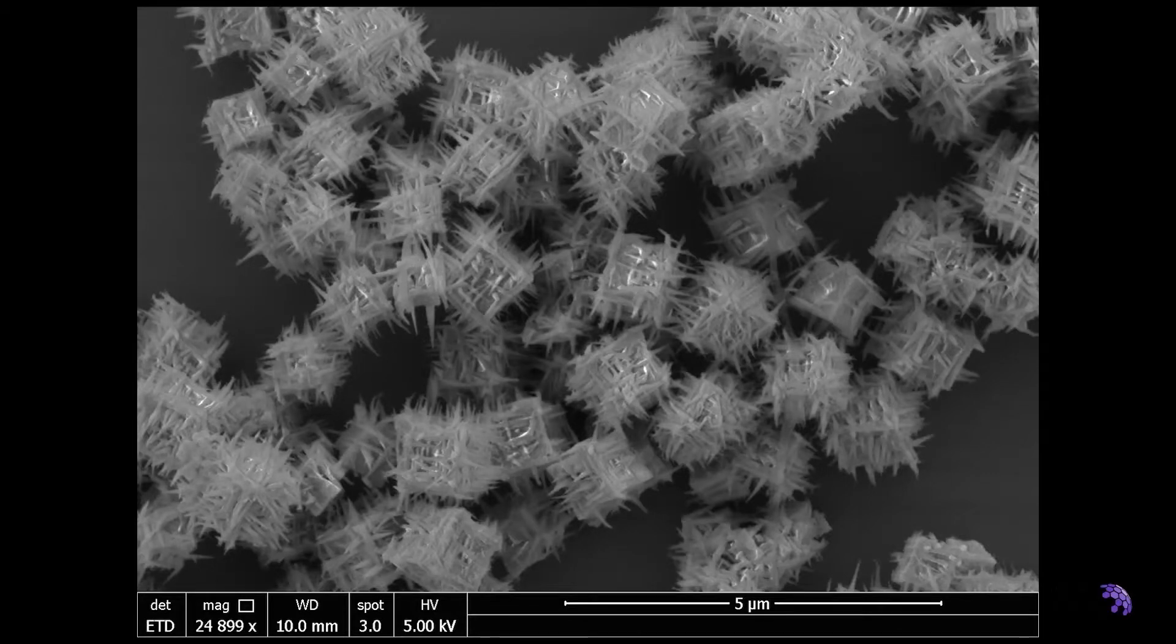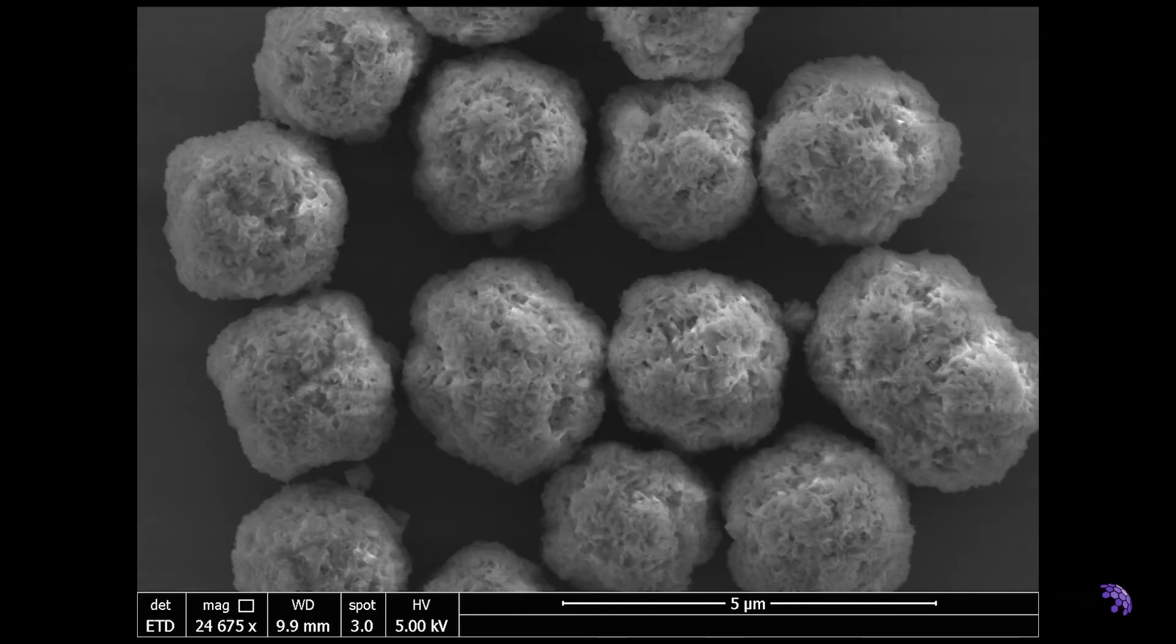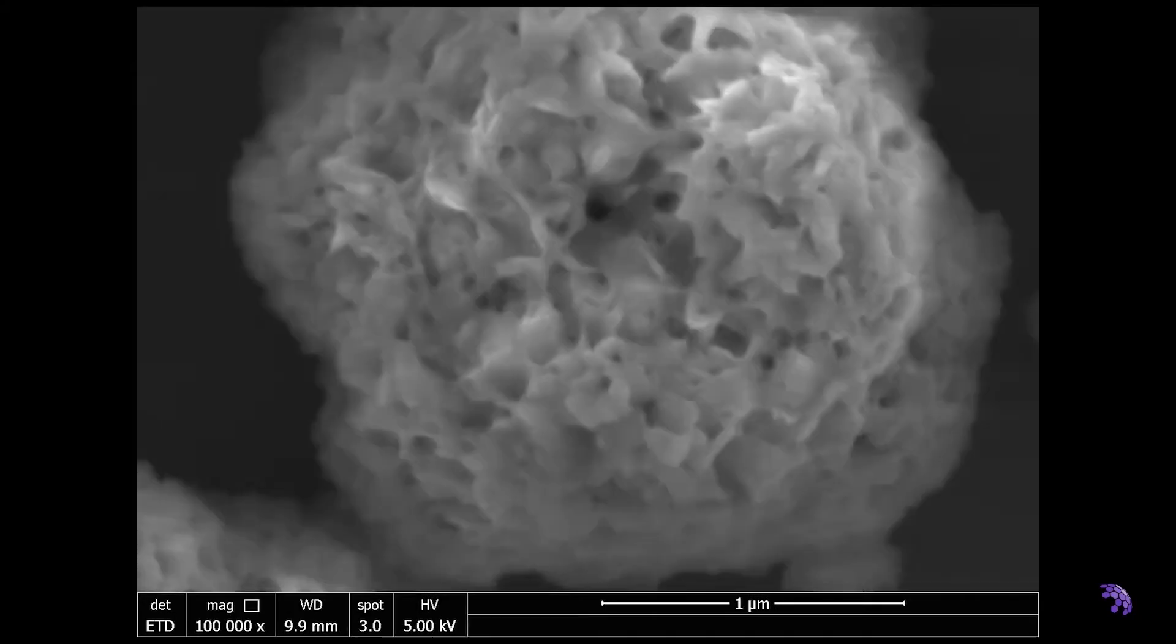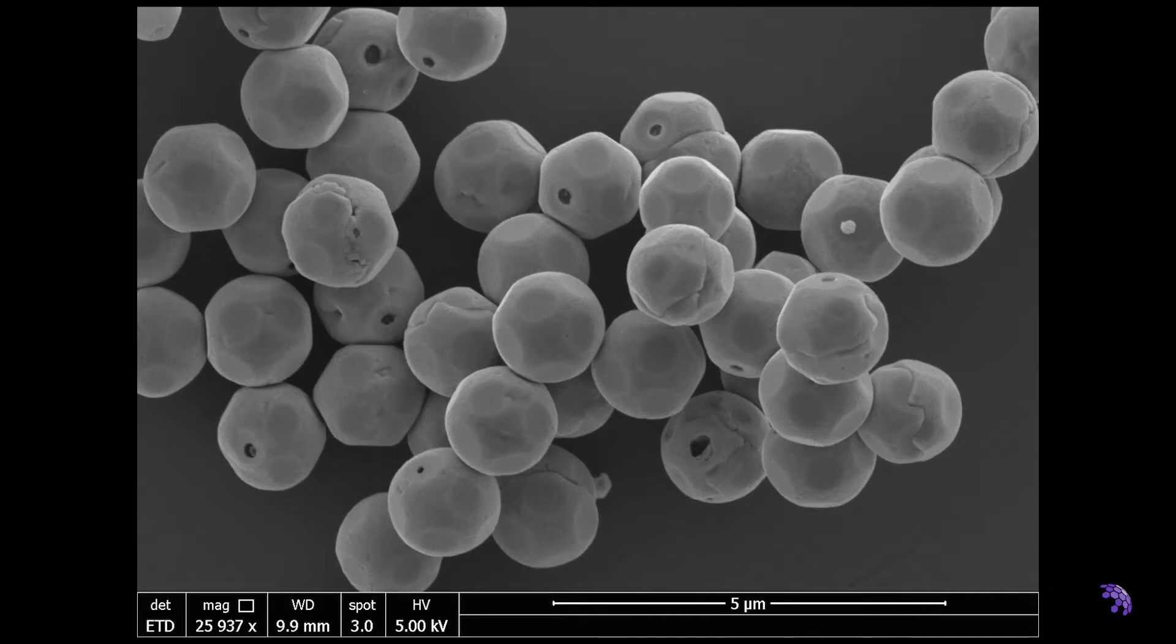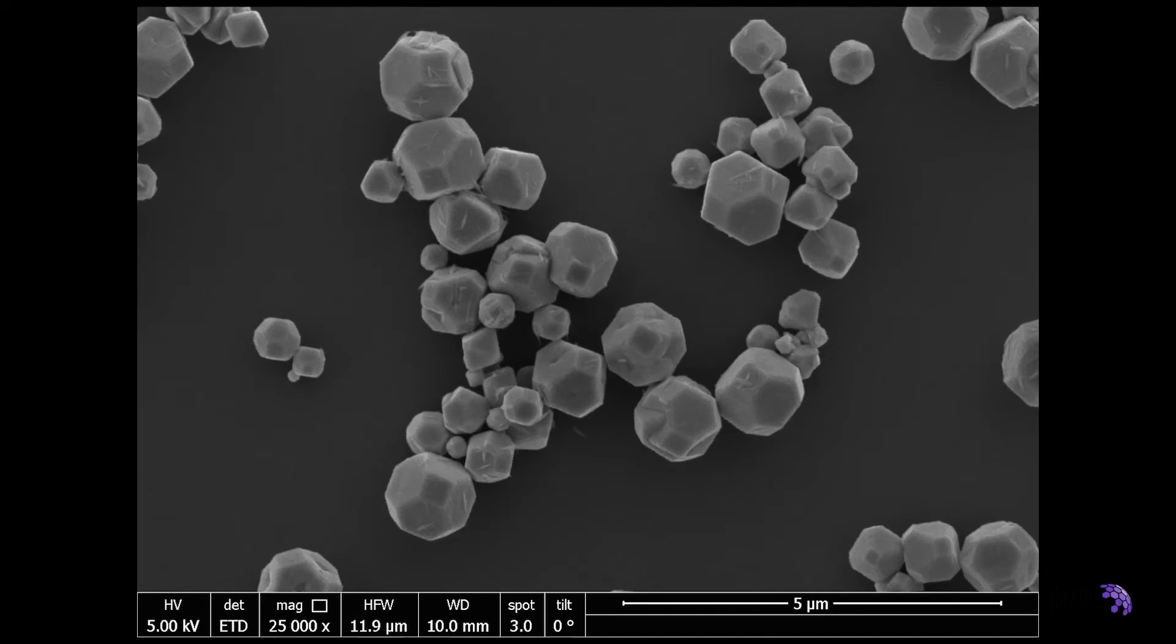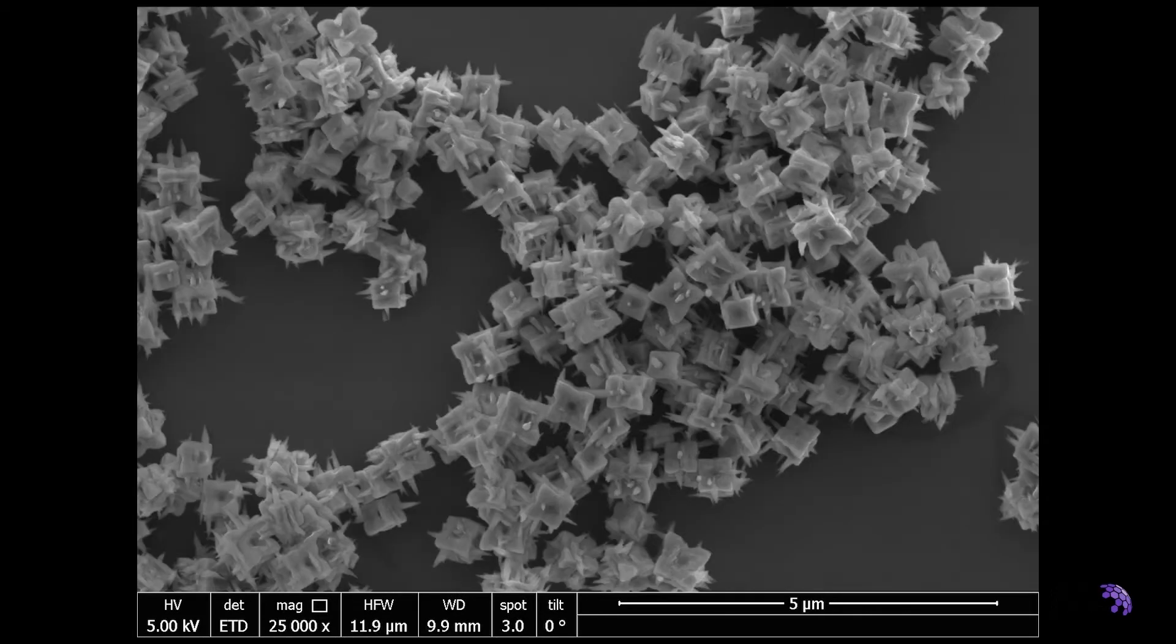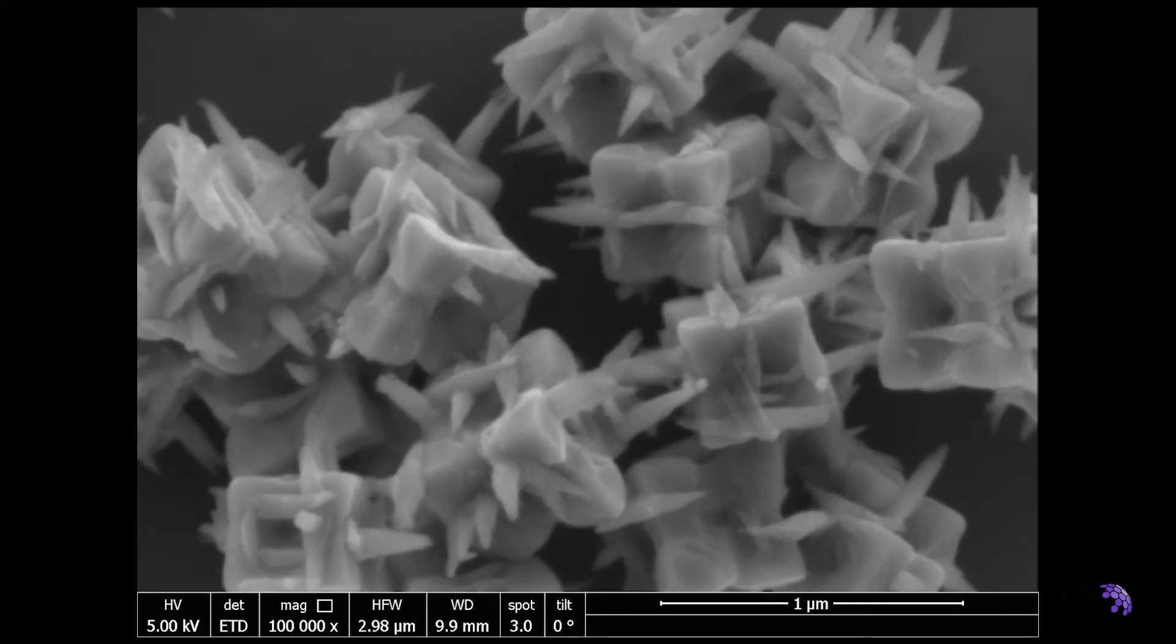SEM imaging is important for characterization of nanoparticles because when reaction conditions are adjusted, particles spontaneously appear in a wide variety of shapes. The details of the shapes revealed in these images, such as internal pores or spiky surfaces, are important for applications and for understanding how the particles form.